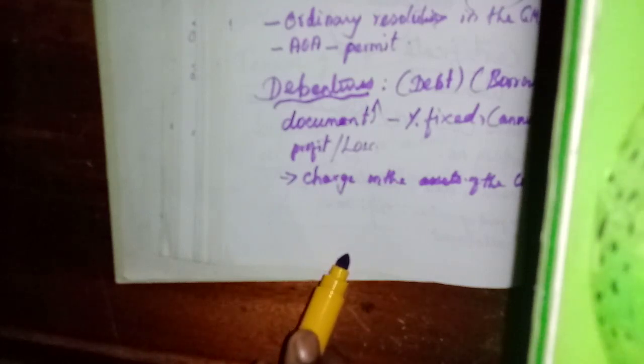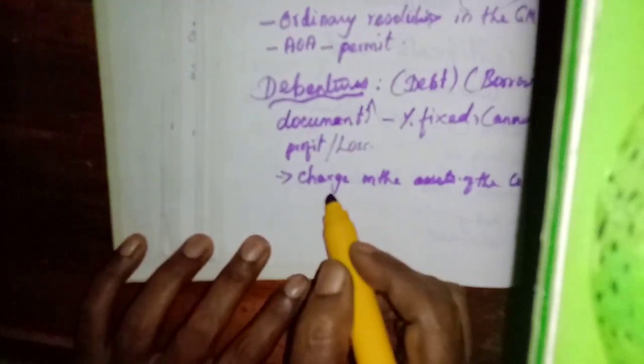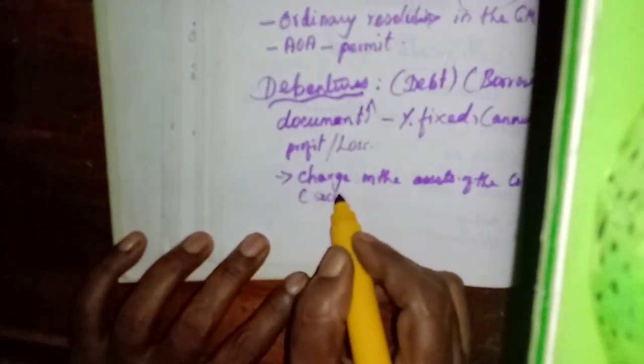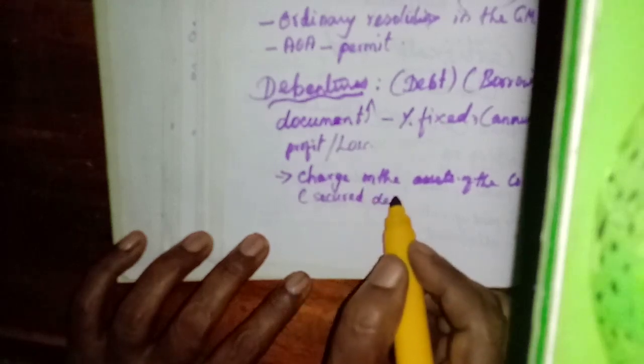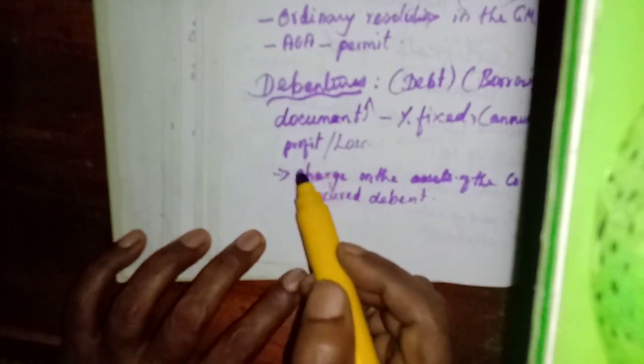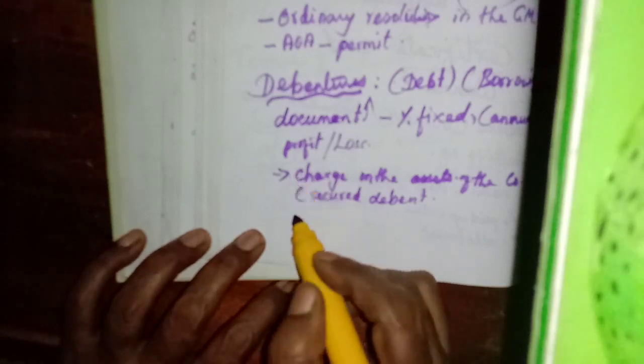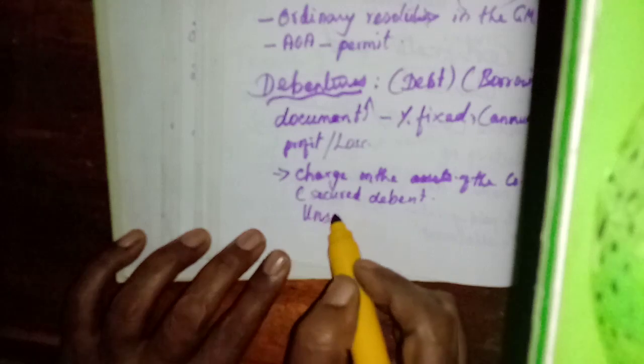The debenture holders are the lenders of money, and the company is the borrower. So they can charge any asset as evidence. If they have given a charge, they are called secured debentures. Some debentures may not be secured — no asset is given as charge against that amount. Those are called unsecured debentures.